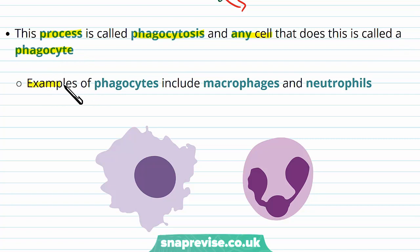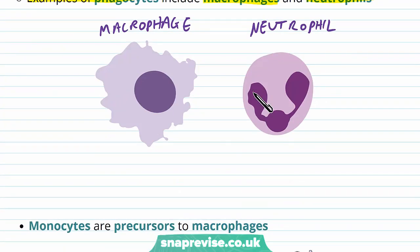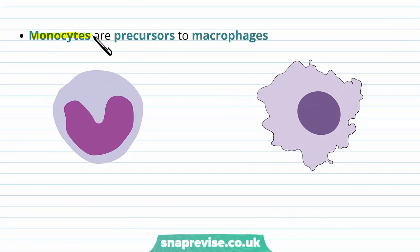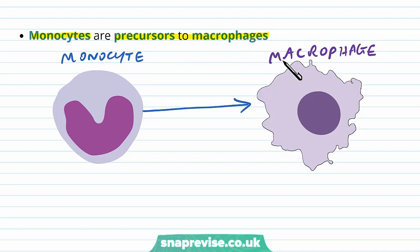The most well-known examples of phagocytes include macrophages and neutrophils. Macrophages are very large cells, and neutrophils are a bit smaller but have a multi-lobed nucleus. Monocytes are a different cell but they're the precursor to macrophages — a monocyte is basically a macrophage which hasn't become a macrophage yet. So if you see these two cells mentioned, they're basically the same, just at different stages in their life.